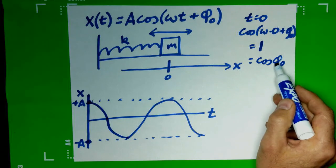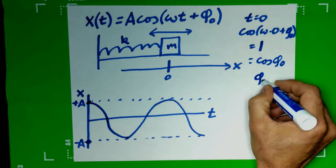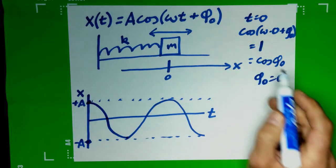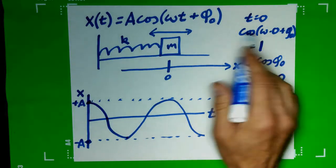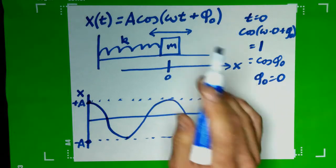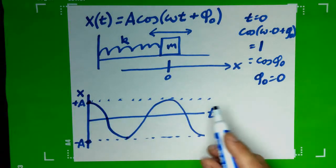Phi zero would have to be zero. So in this case, phi zero equals zero. Cosine of zero gives me one. So this was a fairly simple case. In this case, my phase constant is zero. Or in other words, I start at the maximum positive displacement.